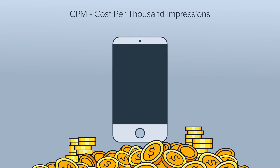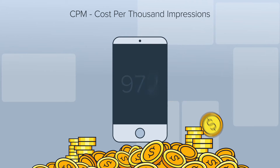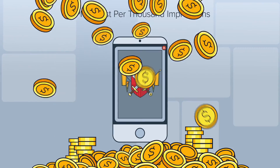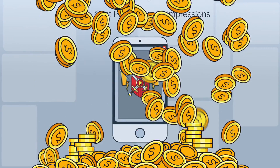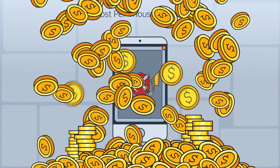CPM stands for Cost Per Thousand Impressions. Advertisers can bid a set price per thousand impressions. This allows you to earn revenue for each impression shown. As soon as the ad appears, you earn revenue.